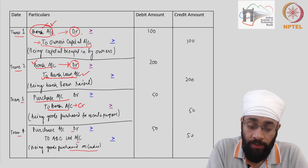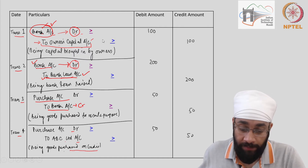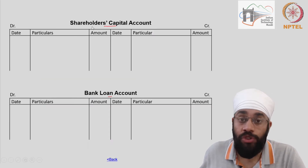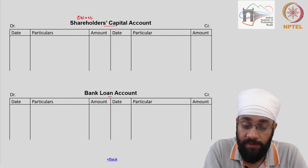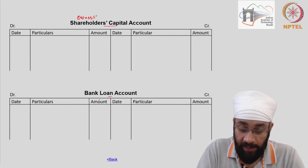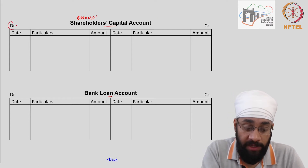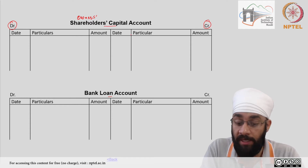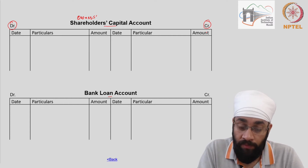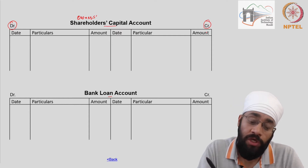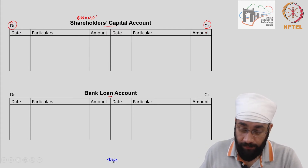Now we are going to look at owner's capital account — bank account is done. Let's start with owner's capital account or shareholders capital account. I'm using these two terms interchangeably. I'm going to click on this link and jump to shareholders capital account. The format remains the same: debit side, credit side, three columns each. We have to look for journal entries which involve shareholders capital account and bring those entries to this ledger account.